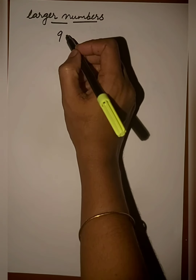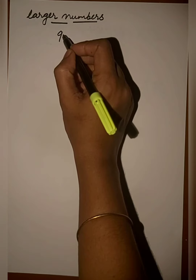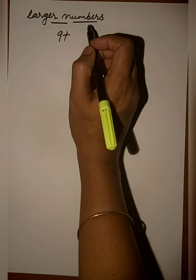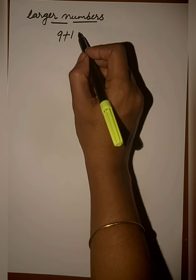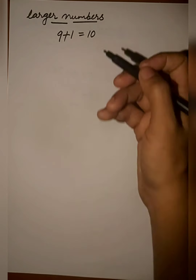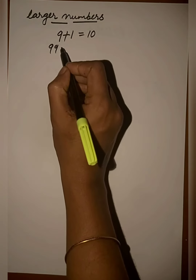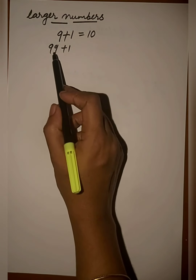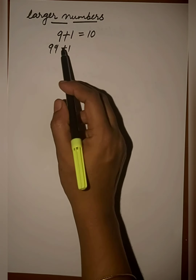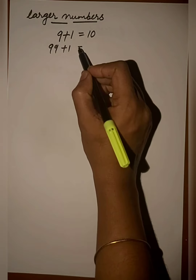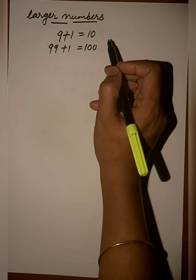Good morning, dear students. Welcome back to Max class. Today we will discuss larger numbers. We know that 9 is the greatest one-digit number. 9 plus 1 gives us 10, which is the smallest two-digit number. 99 is the greatest two-digit number, and 99 plus 1 gives us 100, which is the smallest three-digit number.